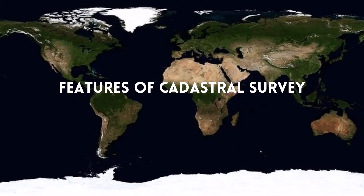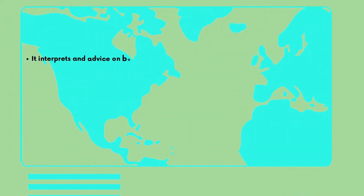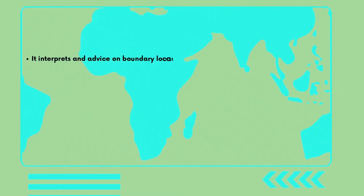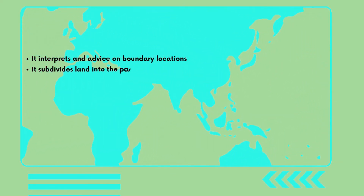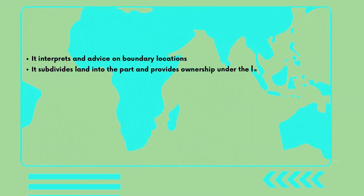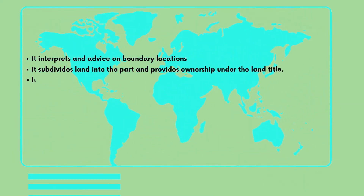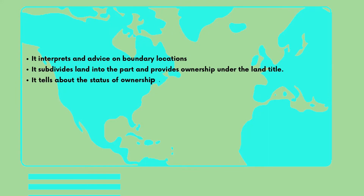Let's look into the features of cadastral survey. A cadastral survey conveys the following principal features: it interprets and advises on the boundary locations, and it subdivides land into parts and provides ownership under the land title.